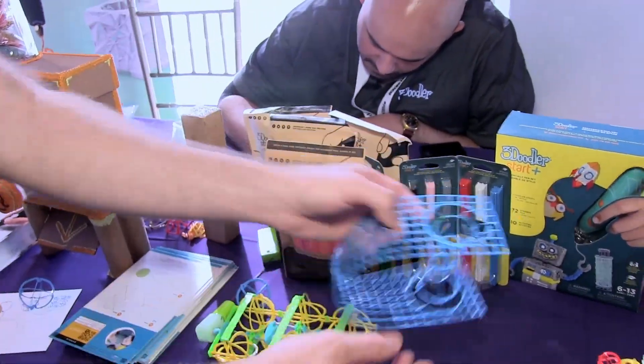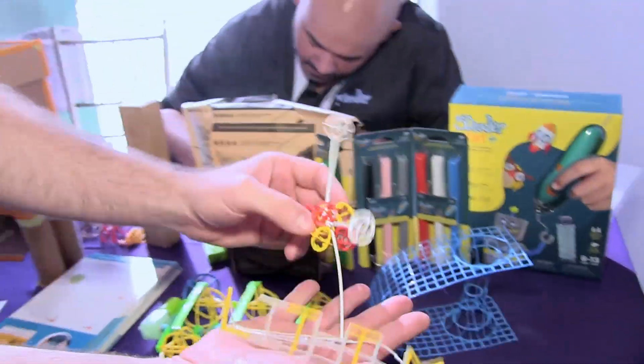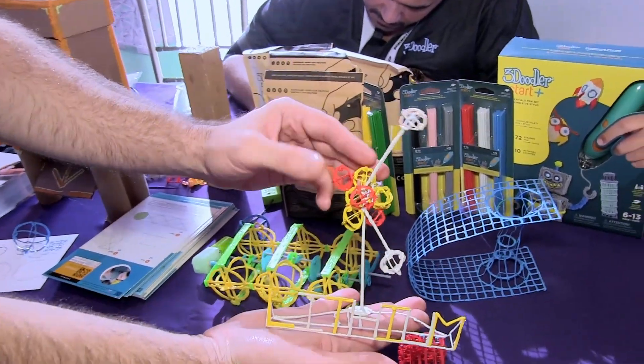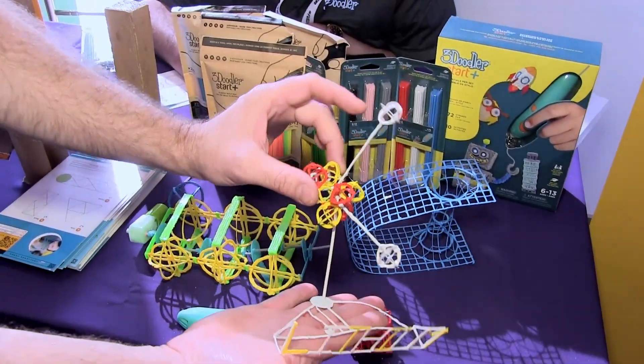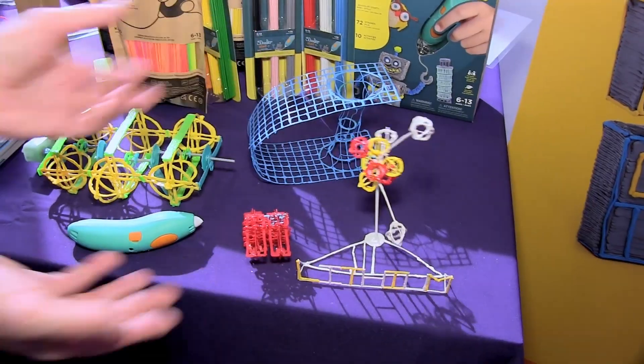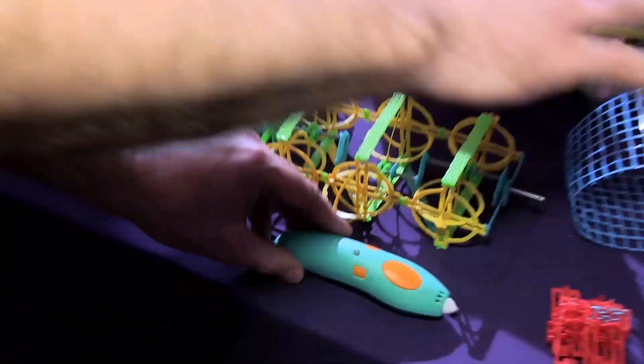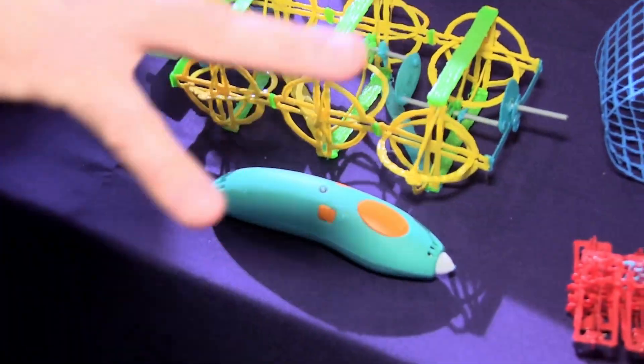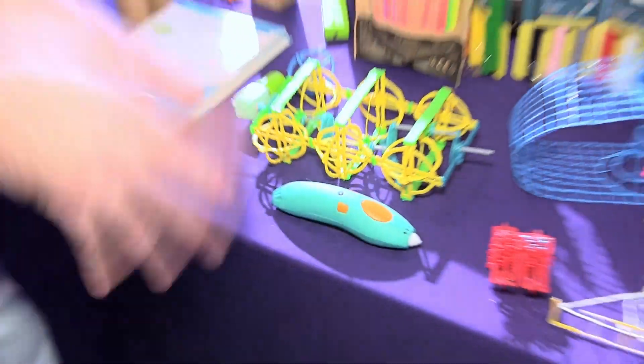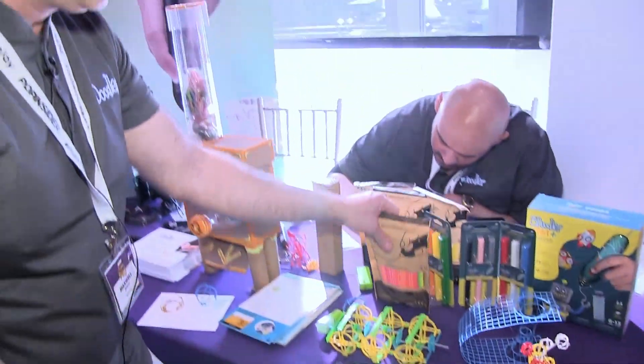This is a lithium atom model containing the appropriate number of neutrons, protons, and electrons. The same thing that powers the 3Doodler Start, which is what was used to make these particular items. This pen, the 3Doodler Start, is a low temperature device. It's easy and safe.